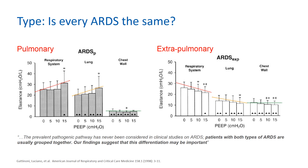Is every ARDS the same? No. We have patients with pulmonary and extra-pulmonary ARDS. Overall elastance of the respiratory system is more or less the same, but the response to an increase in PEEP is contrary. In extra-pulmonary ARDS, we have softer lungs with an increase in chest wall elastance, whereas in pulmonary ARDS, we have stiffer lungs and a significantly softer chest wall. Extra-pulmonary lungs show the same contrary behavior, indicating that patients with extra-pulmonary ARDS tend to have a higher potential for recruitment. The main finding is a different response of respiratory mechanics in ARDS of pulmonary versus extra-pulmonary origin, and this differentiation may be important.